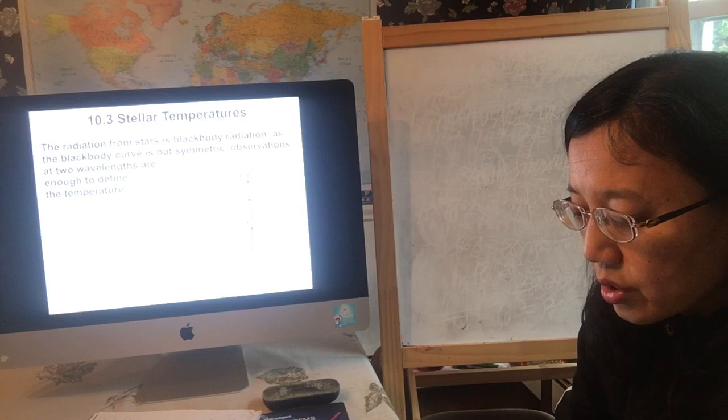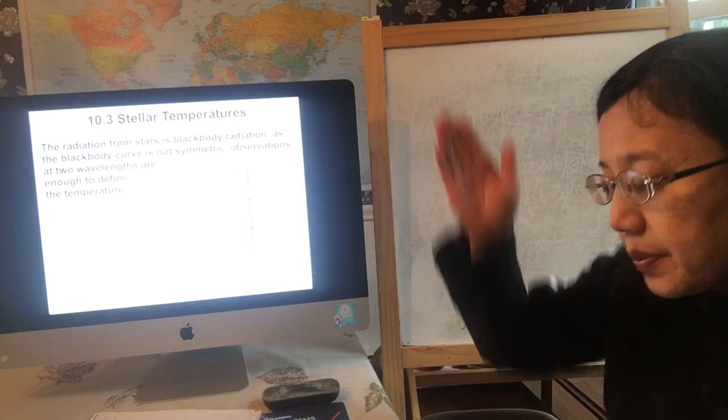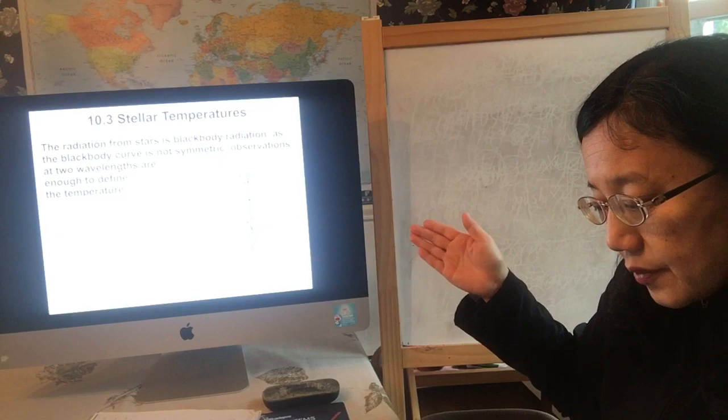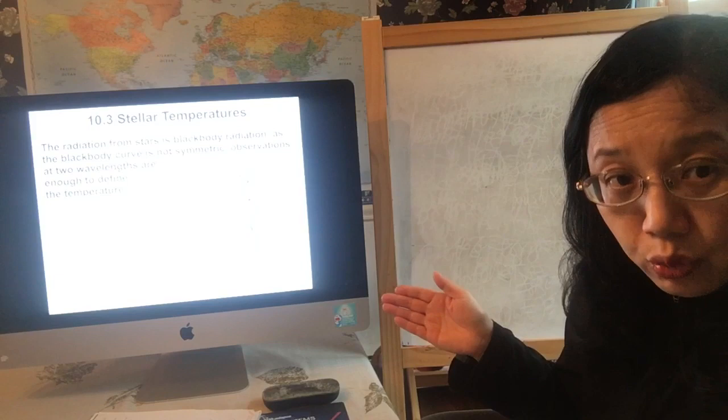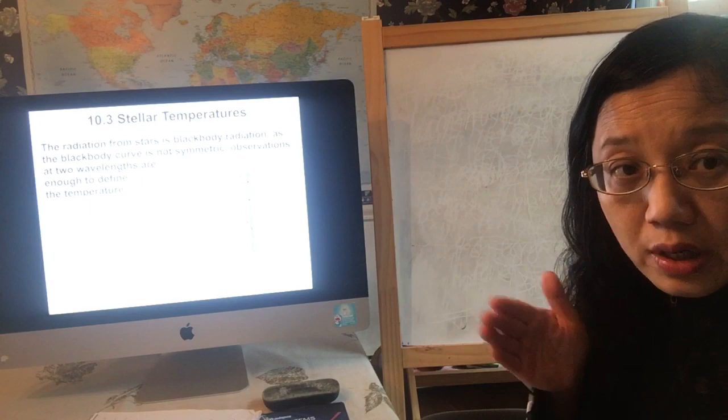The longer the peak wavelength, the cooler the star. Red light has a longer wavelength than blue light, so if the peak wavelength is near the red end of the spectrum, the star is reddish and cooler. If the peak wavelength is at the shorter, blue end, the star is bluish and hotter.